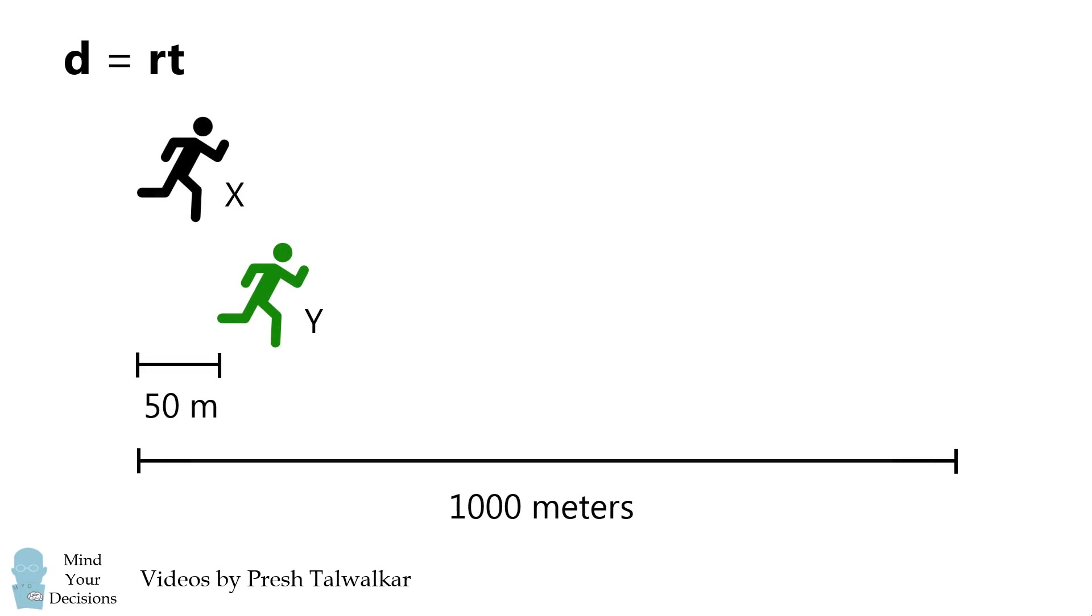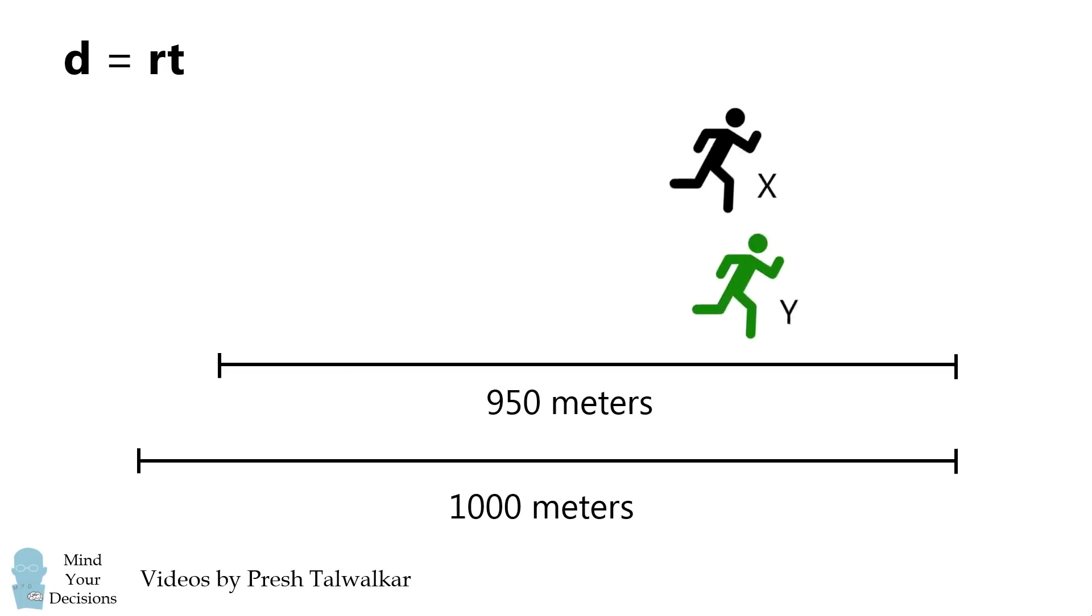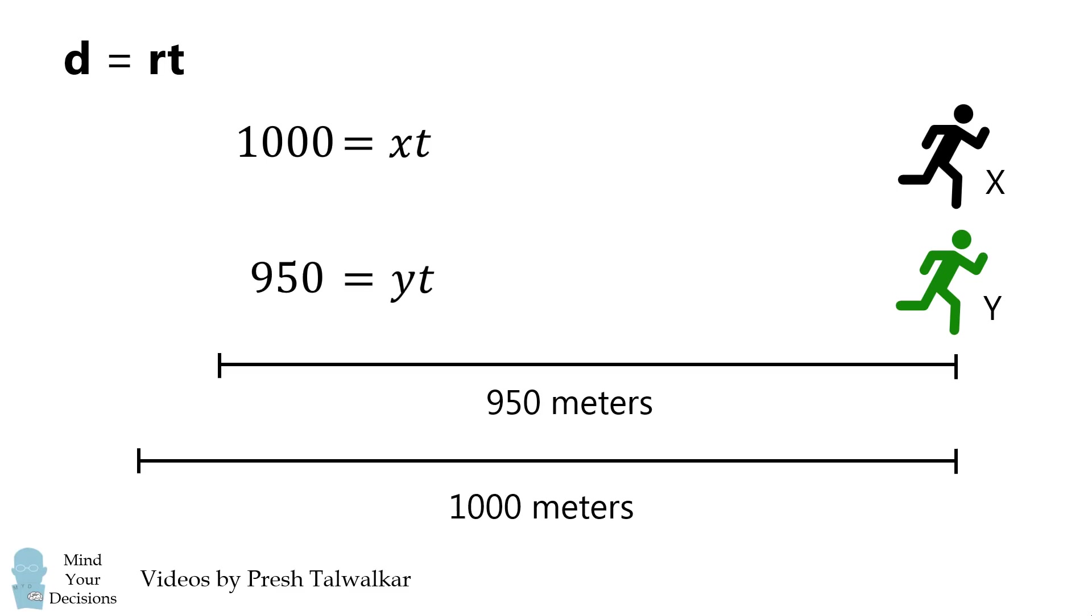Now X is running 1000 meters in the same time that Y is running 950 meters. Consequently, we can set up the following equations: 1000 equals X speed multiplied by the time, and 950 equals Y speed multiplied by the same time to complete the race.